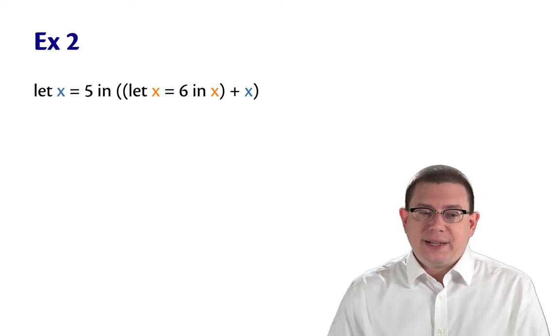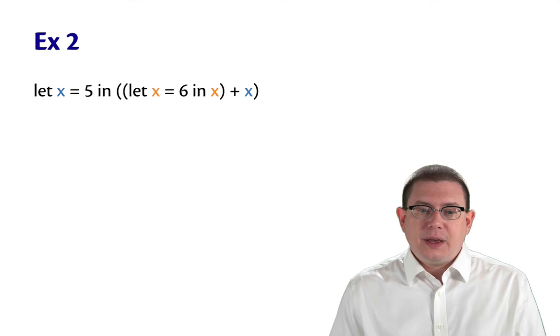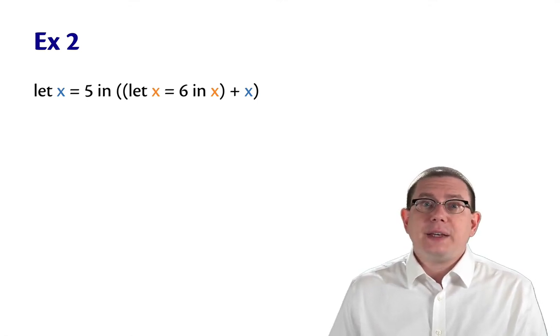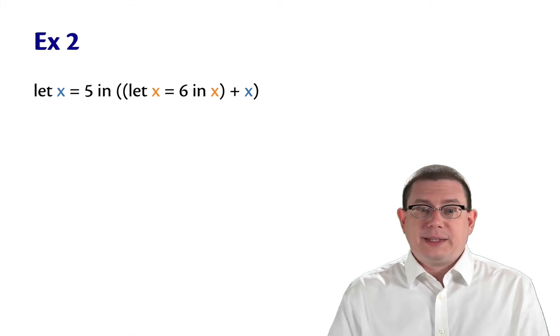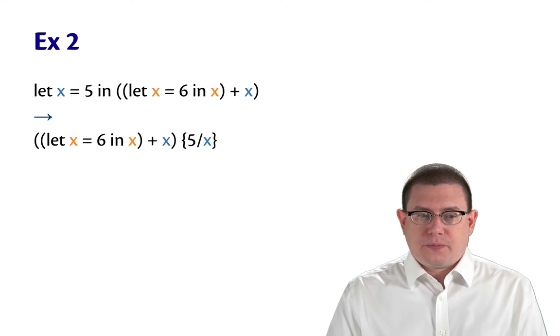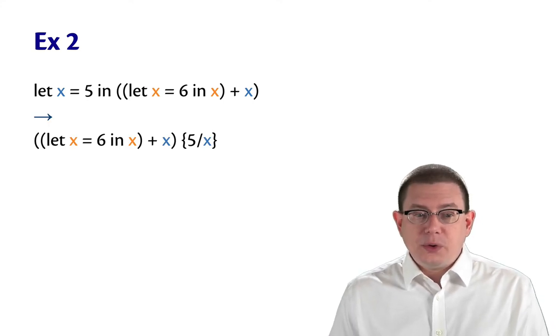So let blue x equal 5 in an expression that has an occurrence of blue x and also has another binding of orange x: let x equal 6 in x. How are we going to do substitution here? Well, this takes a single step.